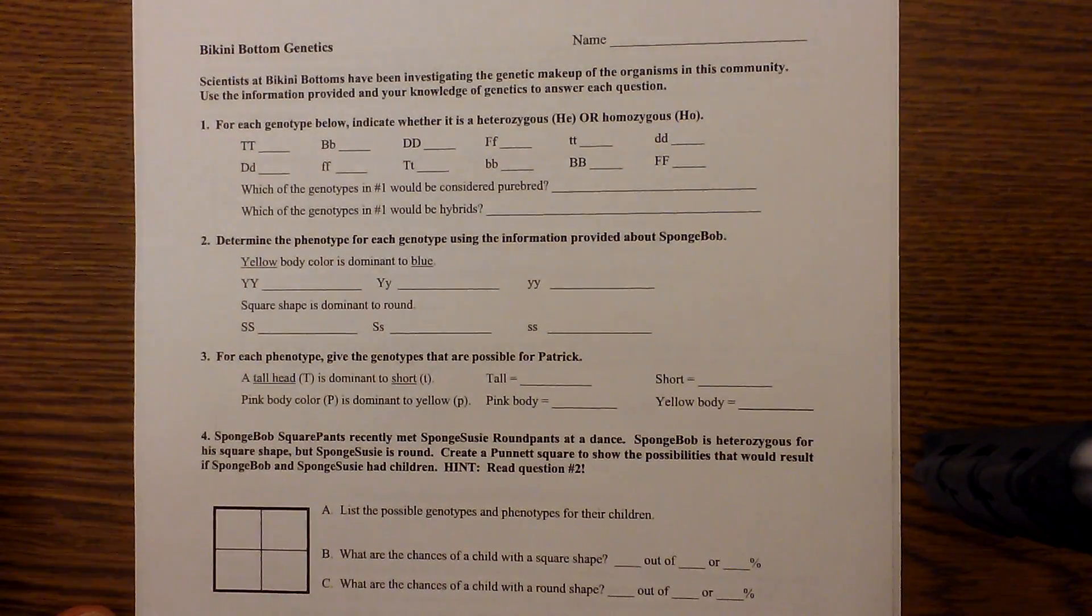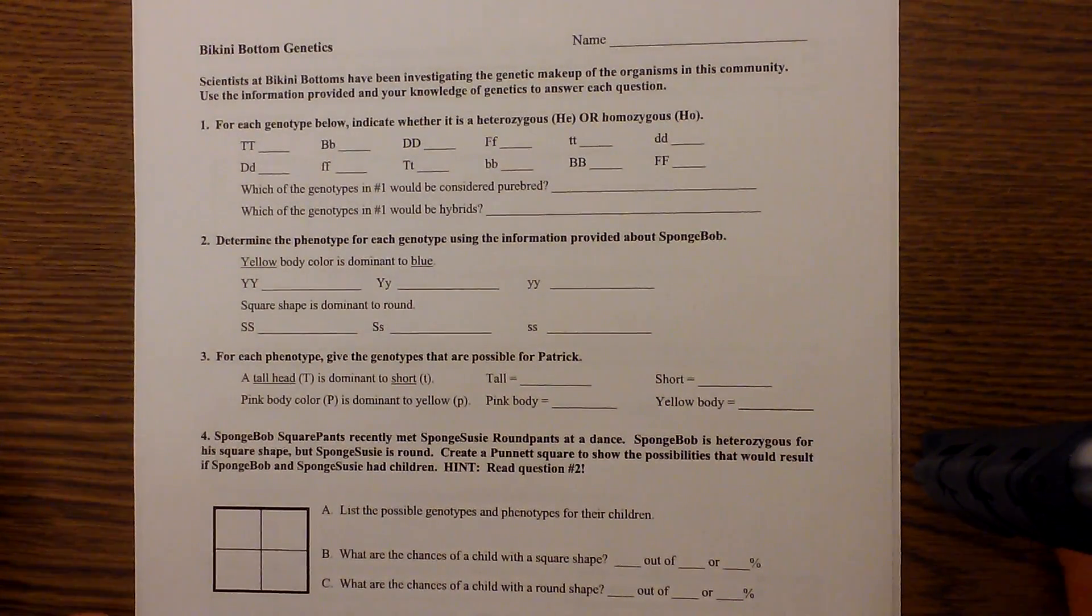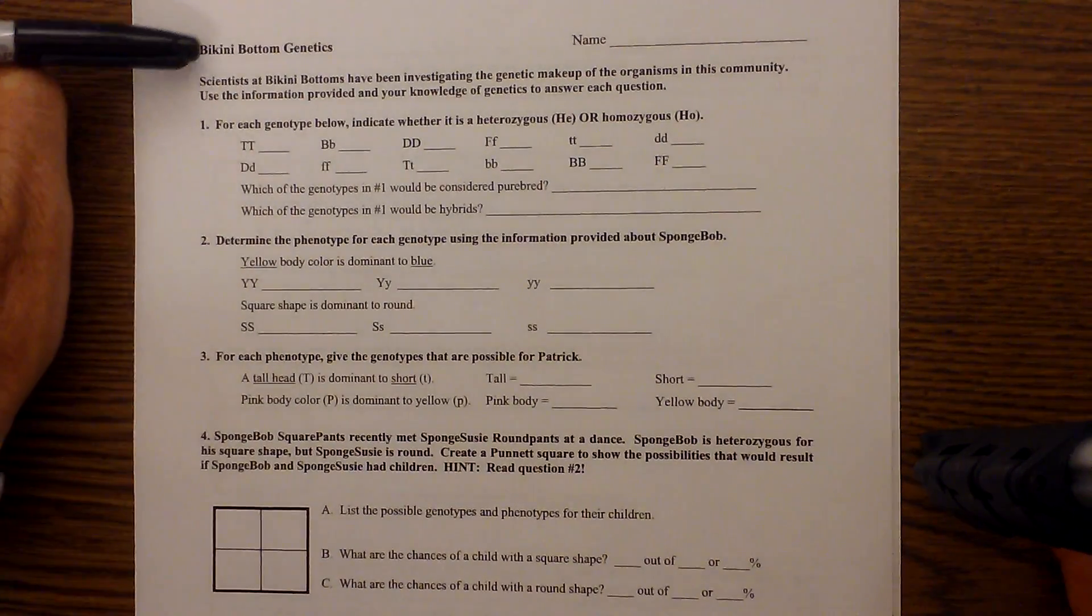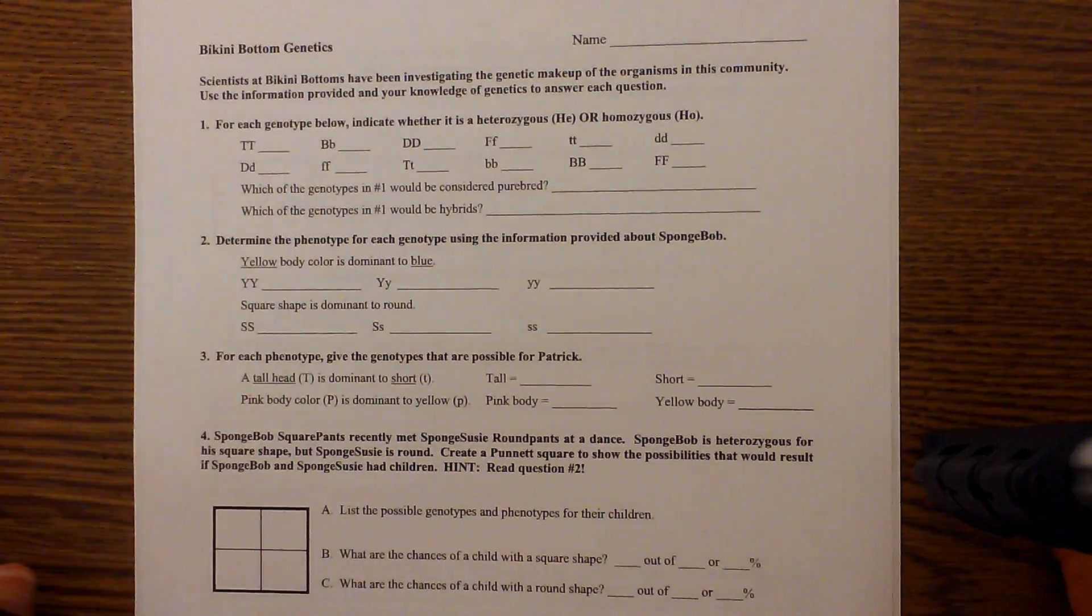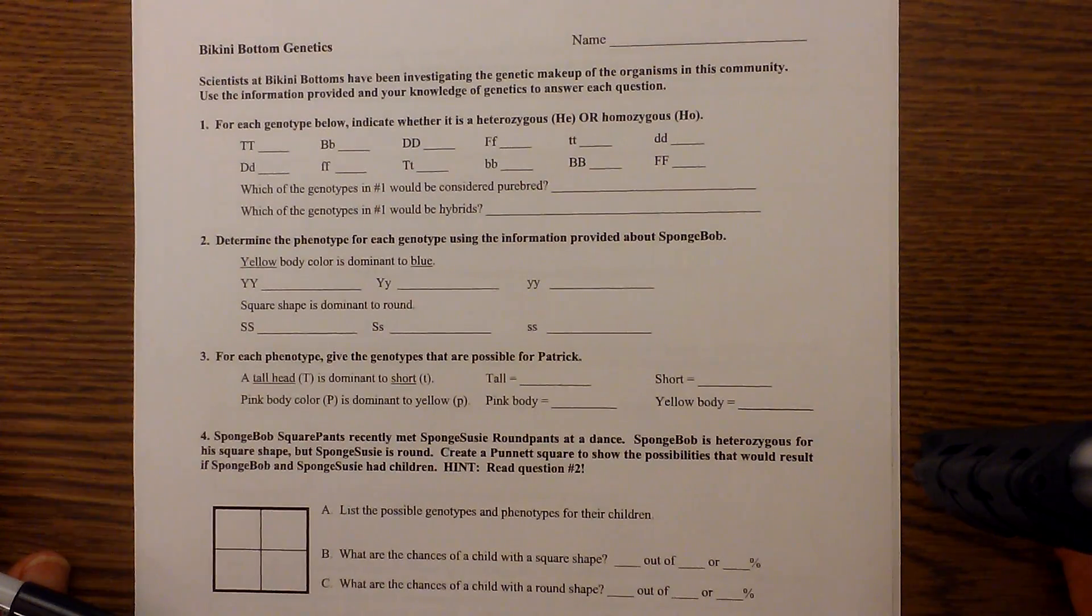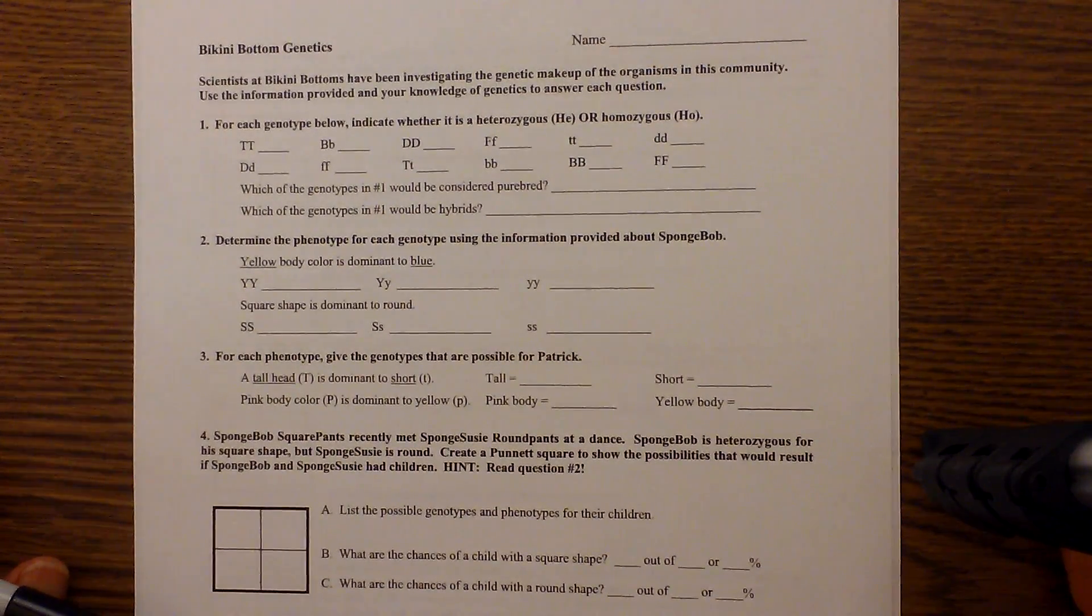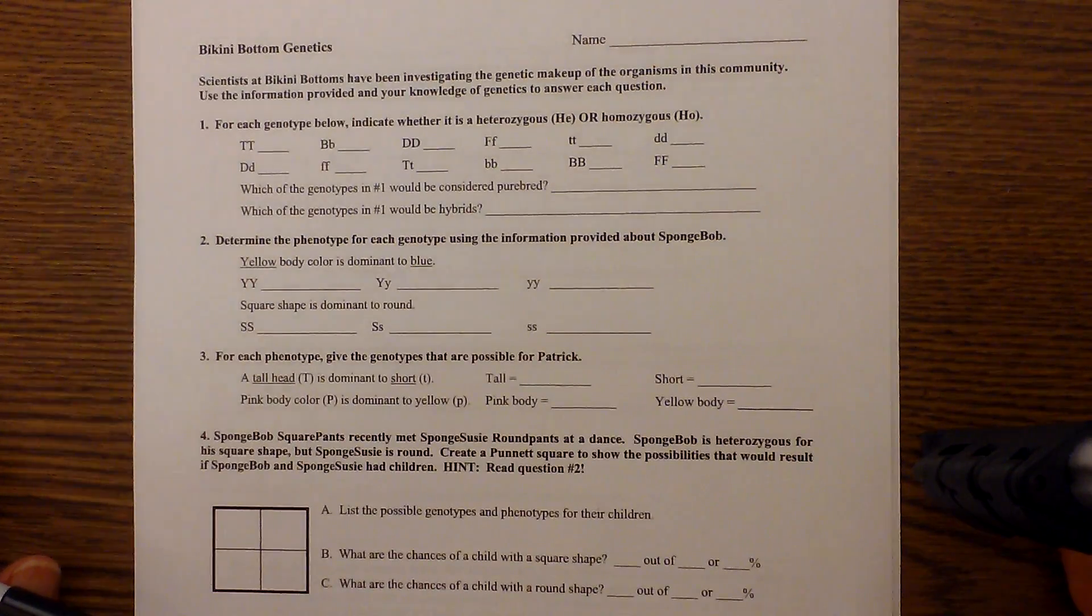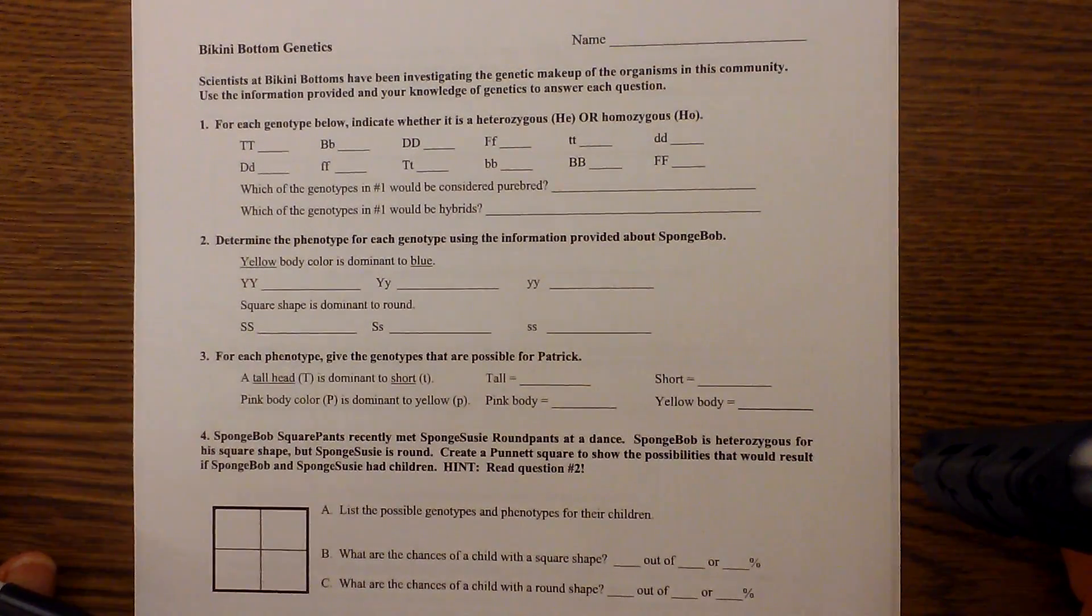In this video I'd like to work on Punnett Squares. I'm using a sheet called Bikini Bottom Genetics and you can find it at ScienceBot. I'll leave you a link below. It's a very helpful practice sheet on doing Punnett Squares. So let's go ahead and get started.